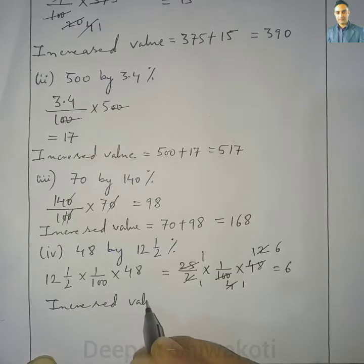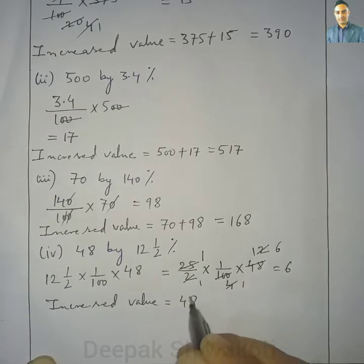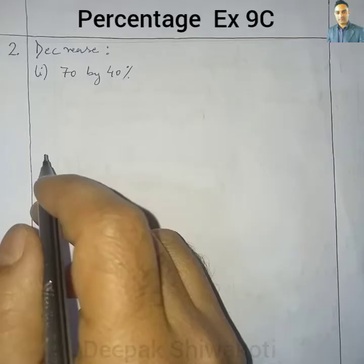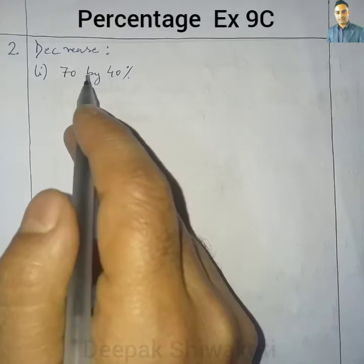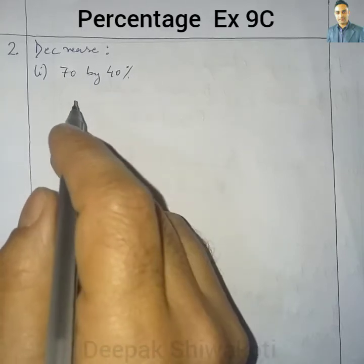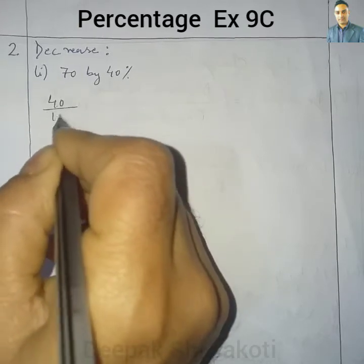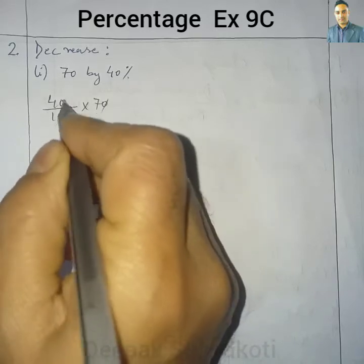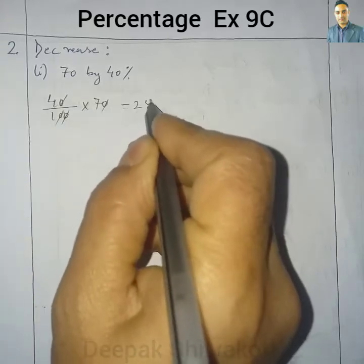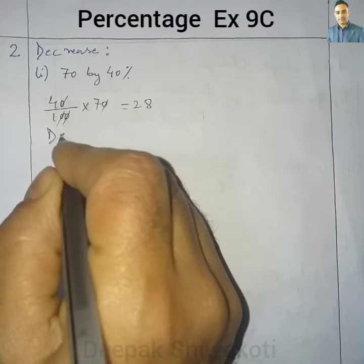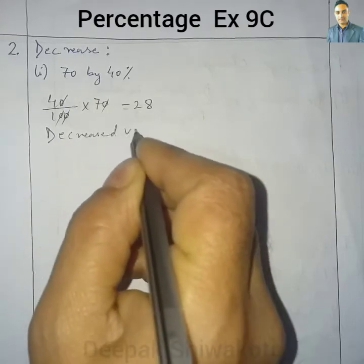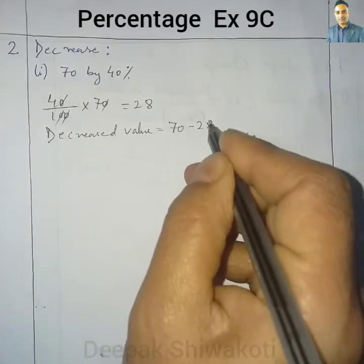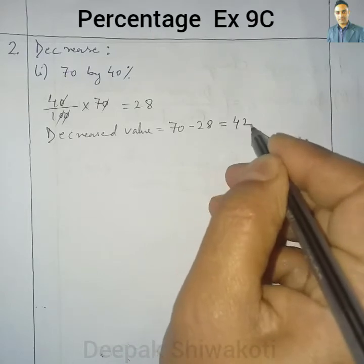Question 2.1: Decrease 70 by 40%. We calculate 40% of 70. 7 multiplied by 4 equals 28. The decreased value is equal to 70 minus 28, which equals 42.